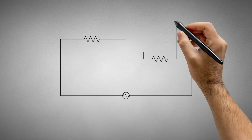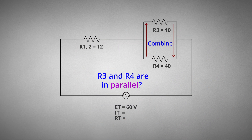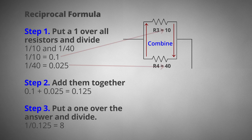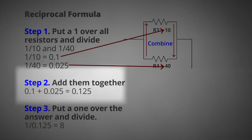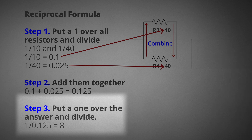Remember to redraw the circuit once you combine the resistors to keep track of what you have calculated. Let's use the reciprocal formula again — R3 and R4 are in parallel. Step 1: put a 1 over all resistors and divide — 1 divided by 10 equals 0.1; 1 divided by 40 equals 0.025. Step 2: add them together — 0.1 plus 0.025 equals 0.125. Step 3: put a 1 over the answer and divide — 1 divided by 0.125 equals 8.